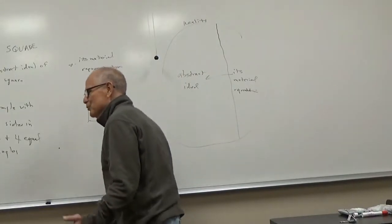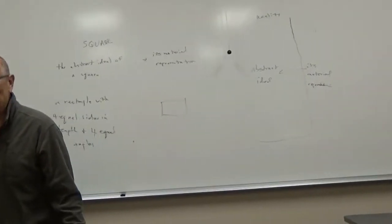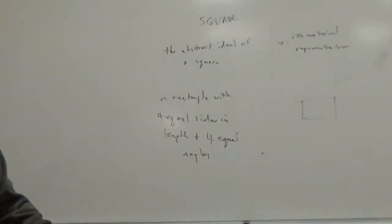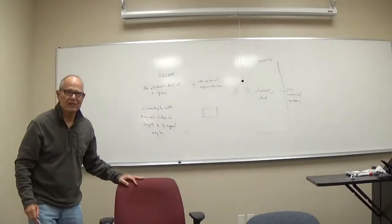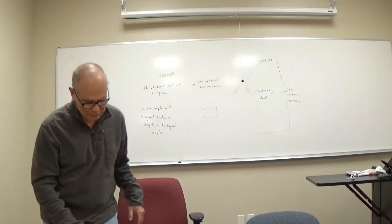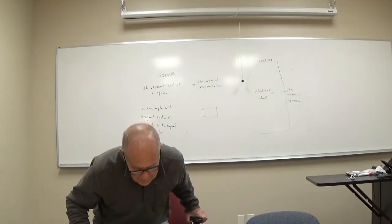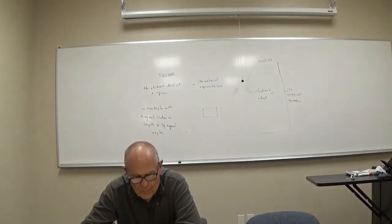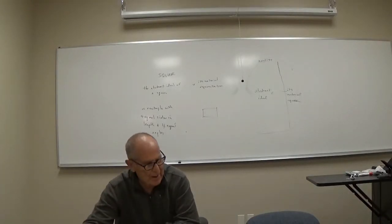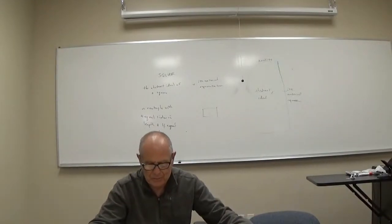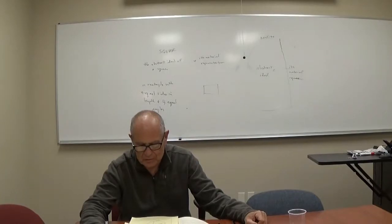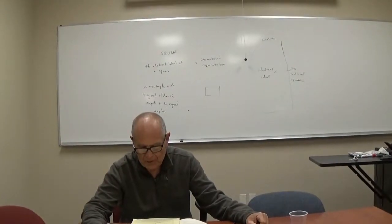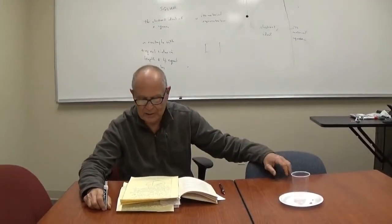According to Plato and Aristotle, reality is made up mostly of the abstract ideal or the universal definition, but not to the exclusion of its material representation. So Plato and Aristotle became the founders of what later was called classical realism — that reality consists, for the most part, of abstract ideals, but not to the exclusion of their material representation.